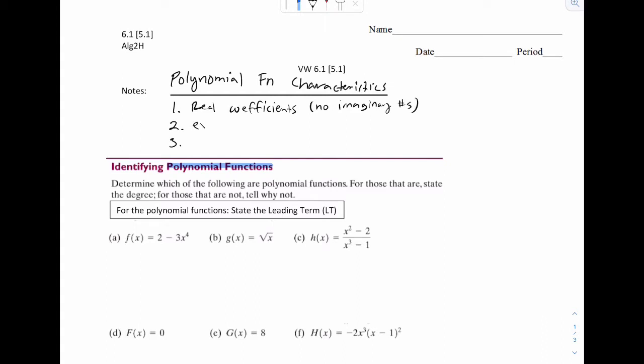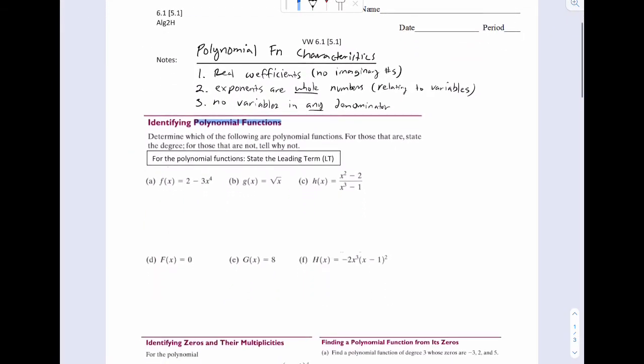Number two is going to be the exponents are whole numbers. And the third one is going to be there are no variables in any denominator. And to clarify number two, that's relating to variables. An exponent on a real number is perfectly fine.